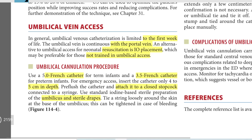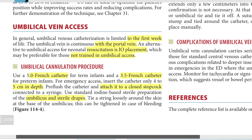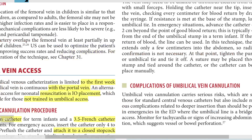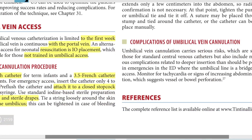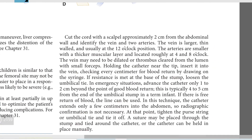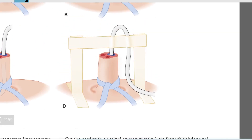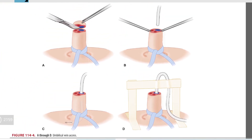Tie a string loosely around the skin at the base of the umbilicus. This can be tightened in case of bleeding. Cut the cord — this is how you cannulate it.